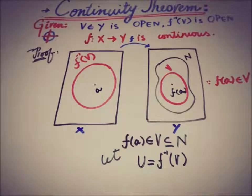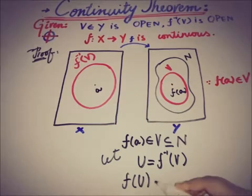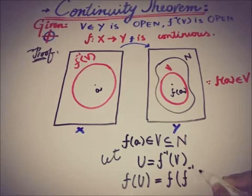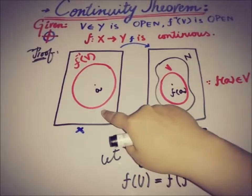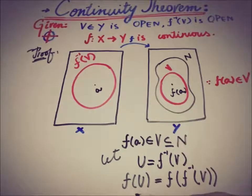If we take the image on both sides, if we take the image of f of U, eventually what we have to do is take the image of that inverse image of V. This is the image of U. What we can write as these cancel out each other, what we get here is only V.